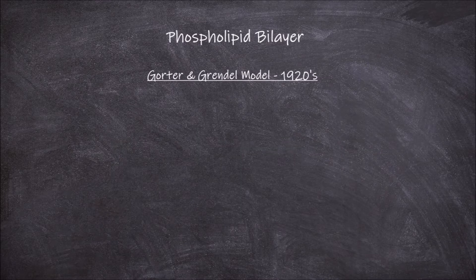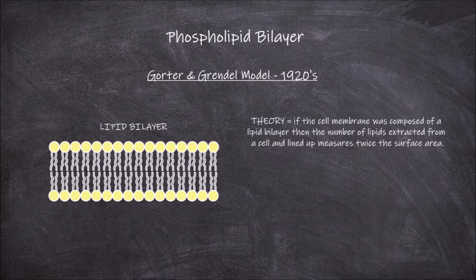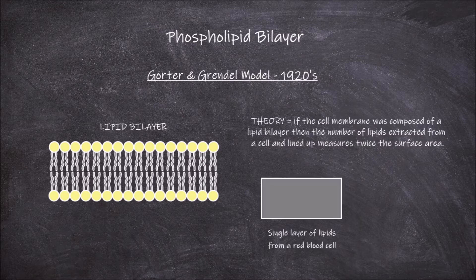They were investigating the structure of cell membranes. They theorised that if the cell membrane was composed of a lipid bilayer, then the number of lipids extracted from a cell and lined up would measure twice the surface area of that cell. They looked at red blood cells and found that the ratio of the single layer of lipids compared to the surface area of the cell was 2 to 1.